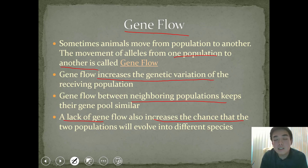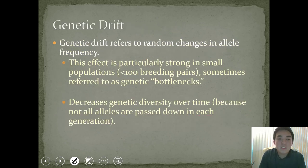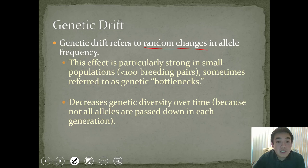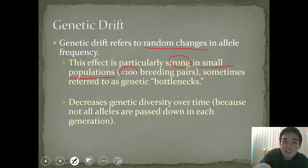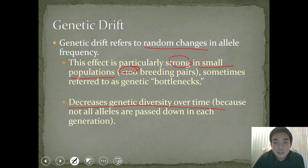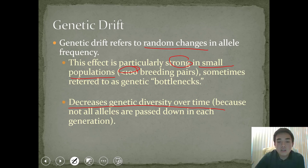We'll talk about speciation and isolation events later in this presentation. Another topic is genetic drift, which refers to a random event that changes allele frequency. Genetic drift is generally seen in very small populations — particularly those with fewer than a hundred breeding pairs. Examples include the genetic bottleneck and founder's effect. Genetic drift decreases genetic diversity over time because not all alleles are passed down in each generation, and those alleles are often lost in subsequent generations.